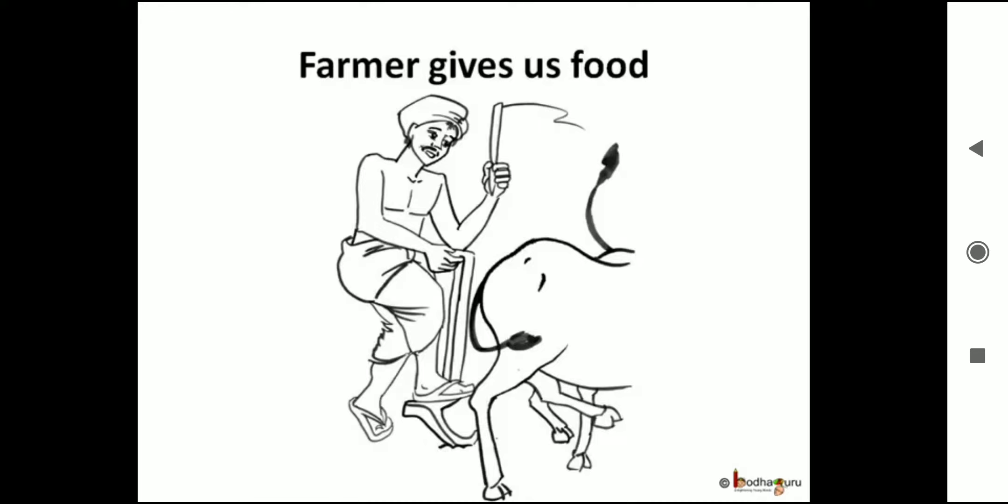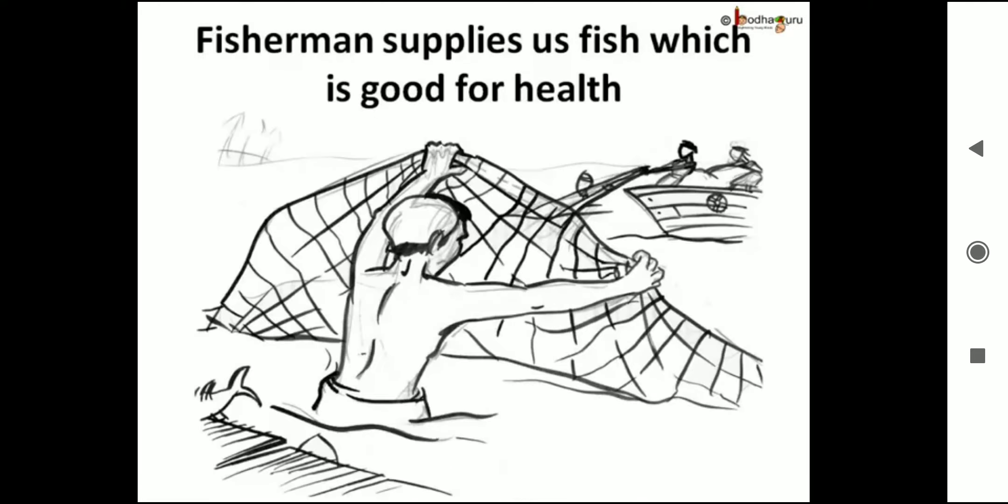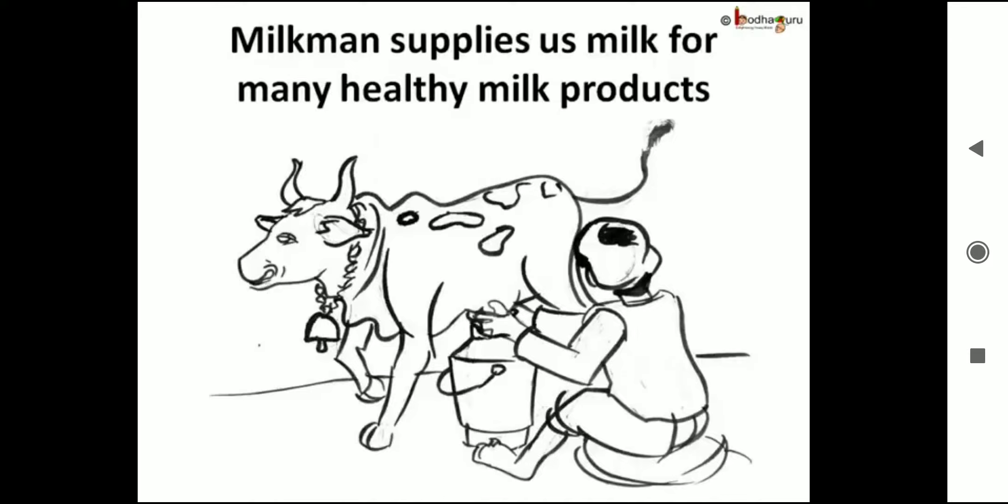Farmers work hard in the fields to grow crops like paddy and wheat. If farmers don't grow enough crops, we all will not have enough food to eat. The fisherman catches fish for us from ponds, lakes, rivers, and seas. The milkman rears cows and buffaloes which give milk.